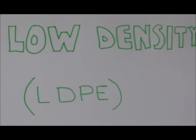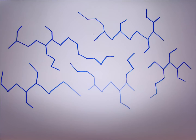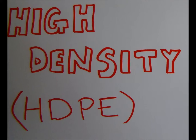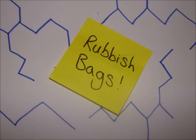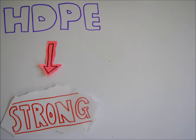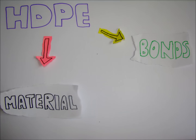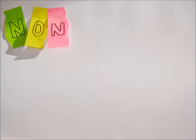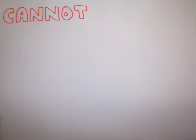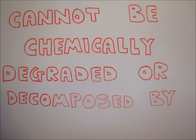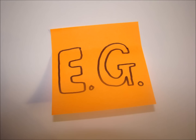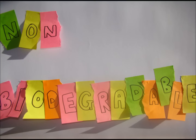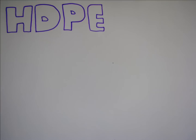In low density polyethylene, chains can't pack as closely as it is highly branched, meaning its properties vary greatly from high density polyethene — it is much more flexible and often used in rubbish bags. High density polyethene is a strong material with strong bonds, meaning the hip implant it is used for is a long term implant and is non-biodegradable.